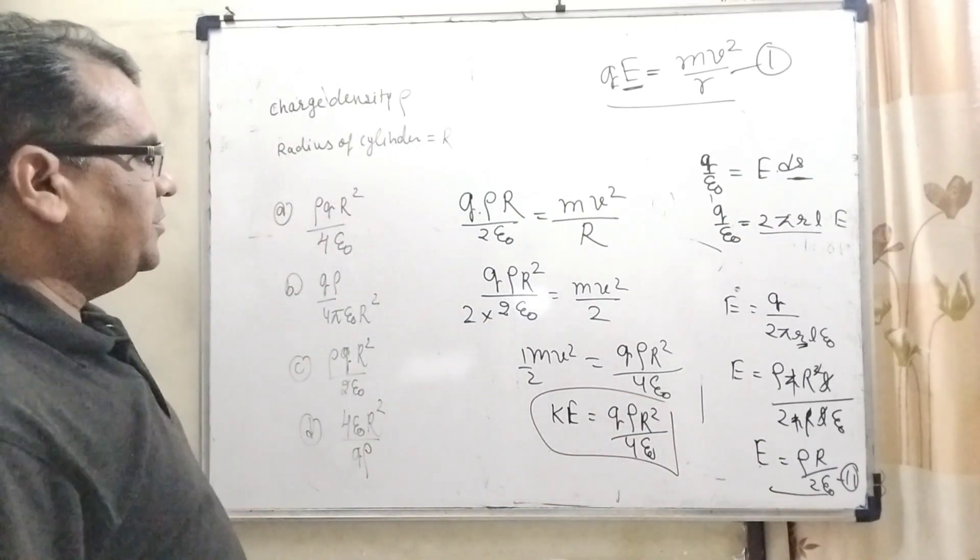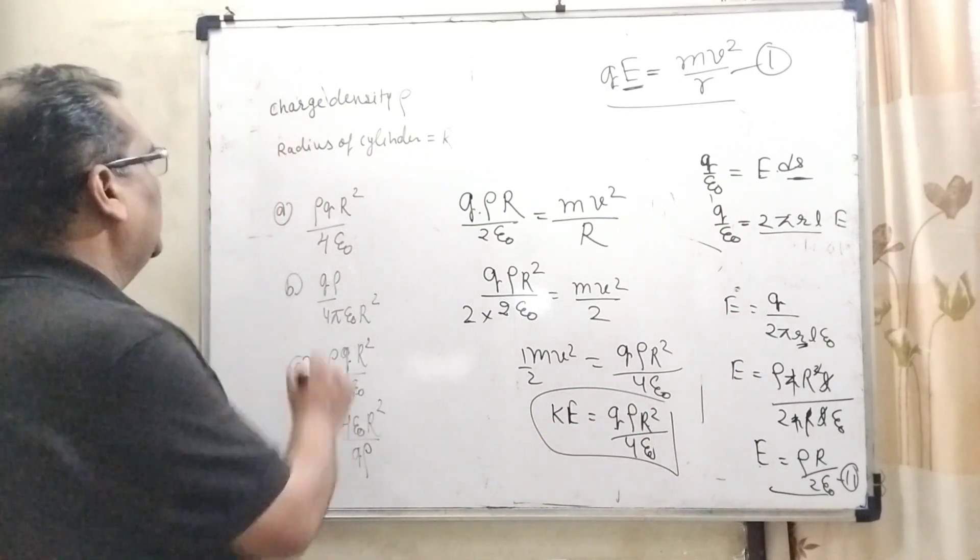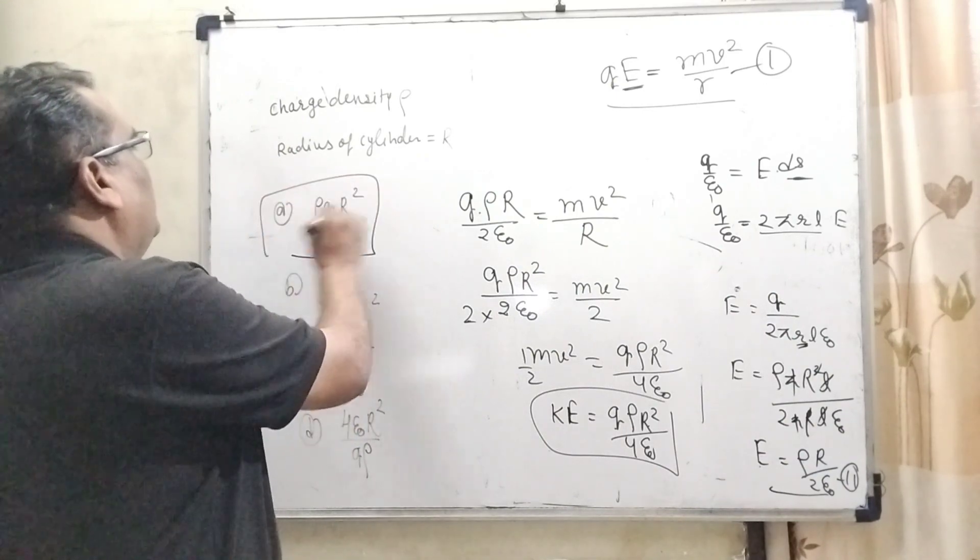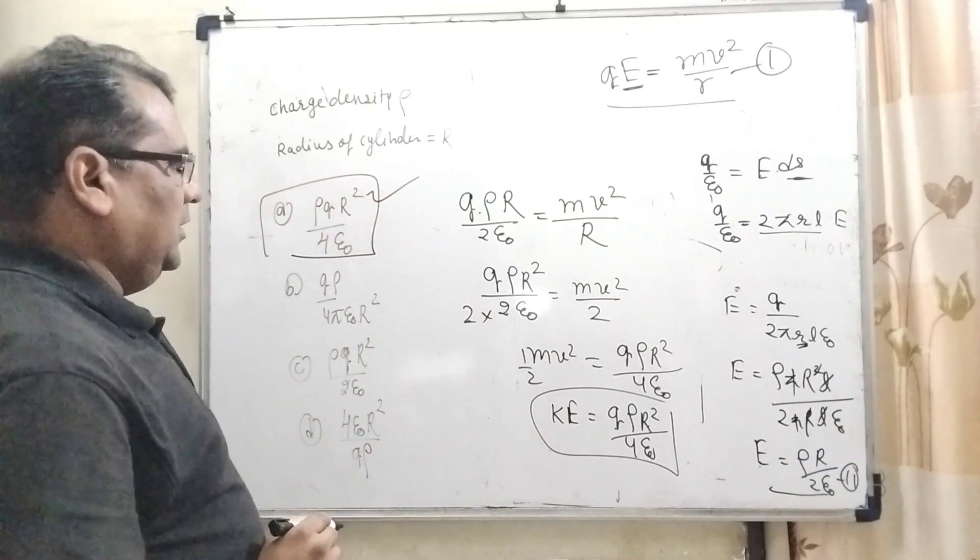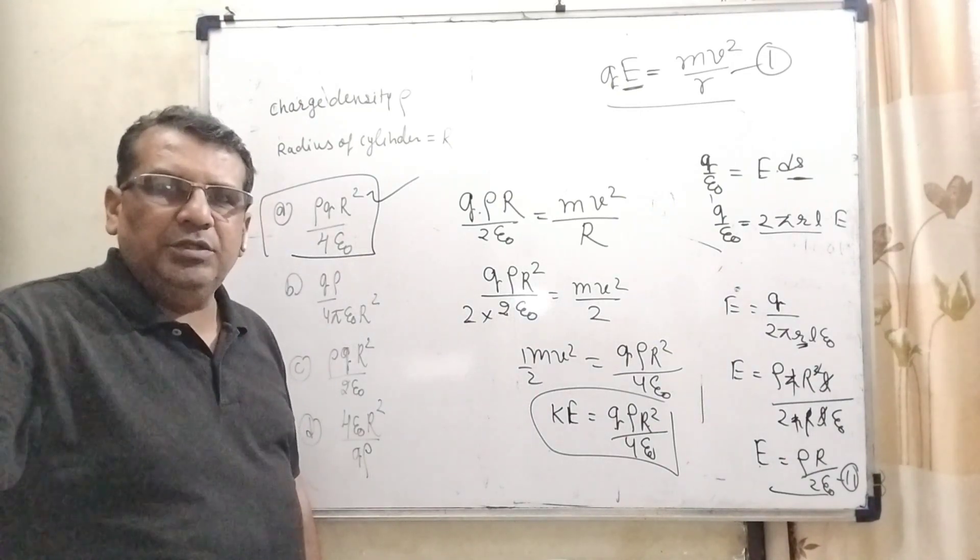Let's see which option is matched here. QρR²/4ε₀. Here option first, QρR²/4ε₀. I hope you understood this question.